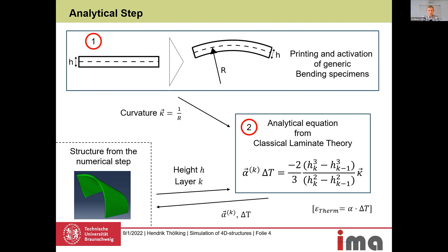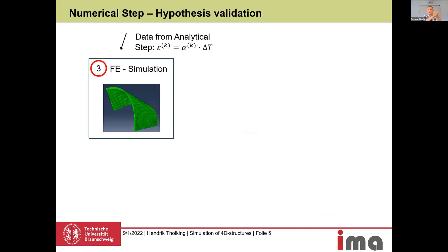We take this layer-wise thermal strain back to the FE simulation. In Abaqus, for example, we allocate the coefficients of thermal expansion to the specific k layers, then define a temperature field with the temperature variation delta T. When we run the simulation, we get a transformed shape. That's basically our simulation approach for 4D printed structures.